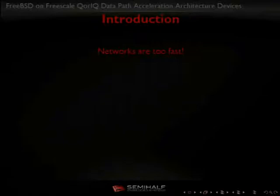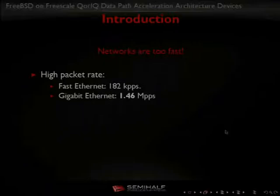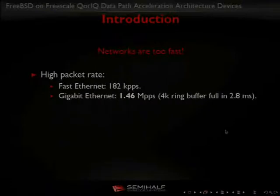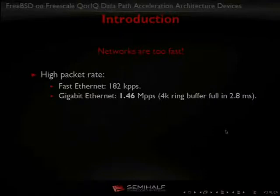Networks are too fast now because of high packet rates. Fast Ethernet is 182 kilopackets per second maximum; Gigabit is more than a million. This means that a typical I/O buffer in a network card will be filled in about 28 milliseconds — the maximum time hardware can run without servicing interrupts. This is quite short, and now 10-gigabit links are becoming popular, so the problem is increasing.